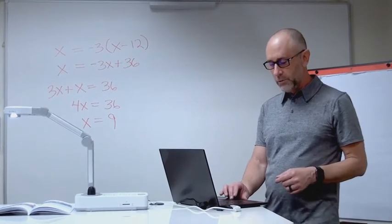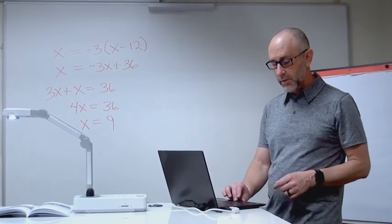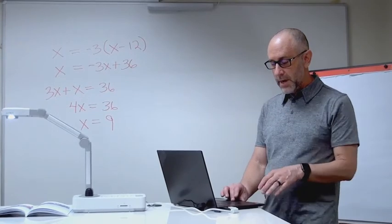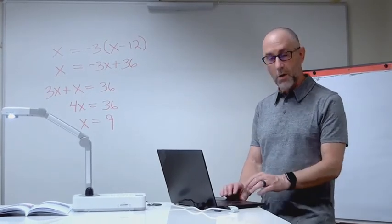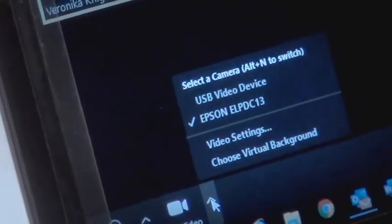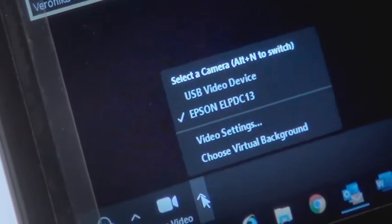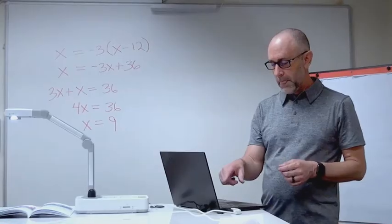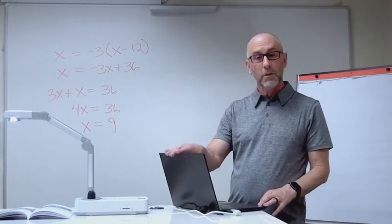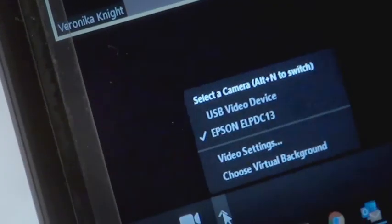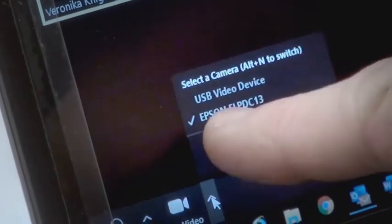Right next to that there's an up arrow. I'm just going to click on that up arrow and you should see the cameras that are available to you. On mine I have a camera that's built into my PC, and then I have the Epson document camera. But this would work with any of our document cameras.